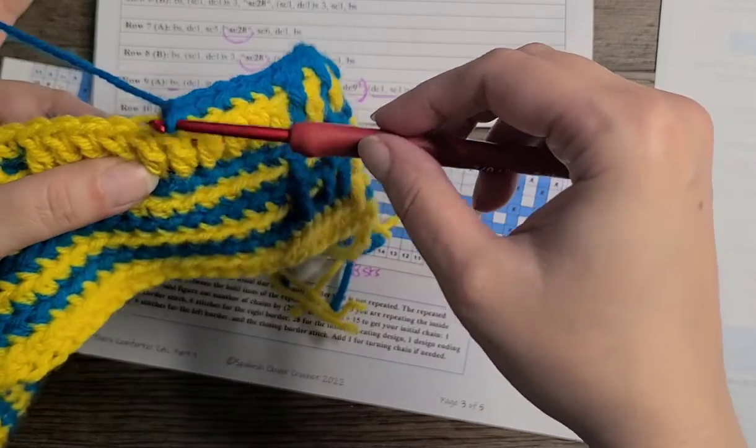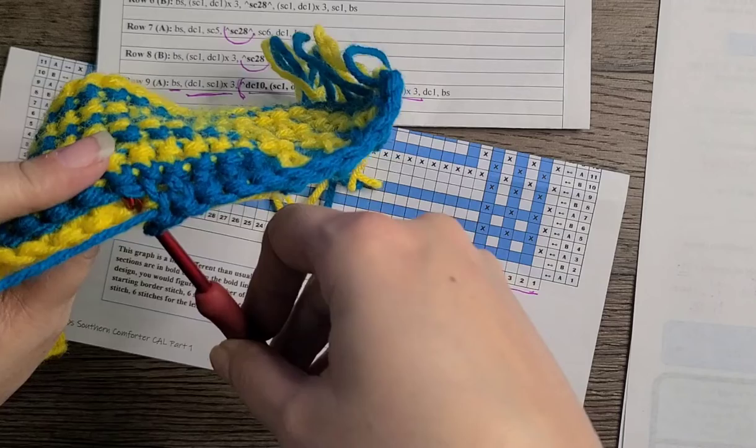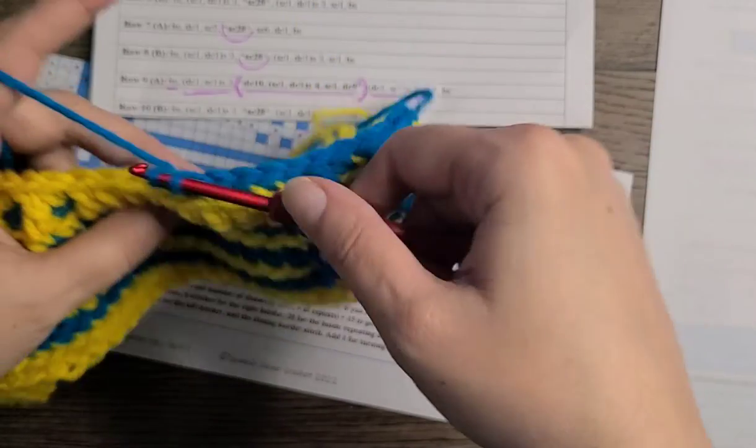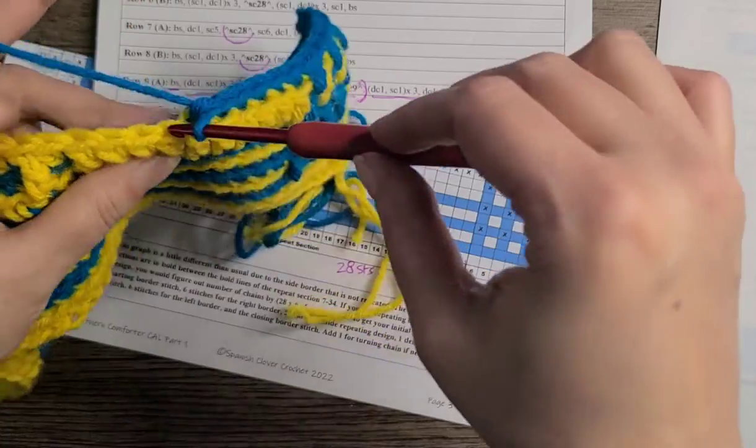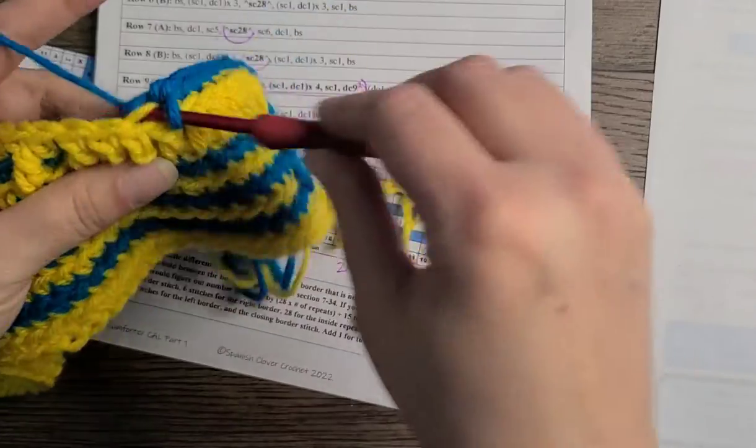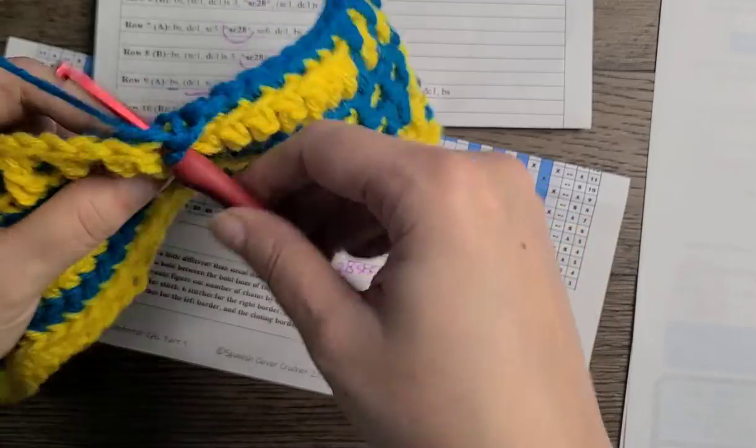So remember anytime there's a DC you go in the back loop of the DC, you go into the back loop of two rows below on the back, and you create your single crochet. And you just keep doing that anywhere you see a double crochet only.